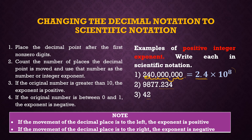For number two, 9,877.234, we move the decimal point to between 9 and 8, giving us 9.877234 times 10 raised to 3, because we moved 3 places to the left. For number three, 42, the decimal point is after the 2 and we can only move one place to the left, so we have 4.2 times 10 raised to 1, or simply 4.2 times 10.